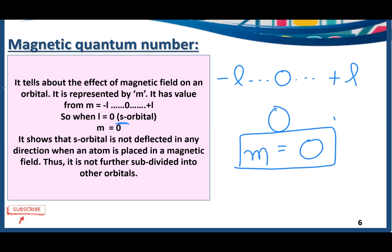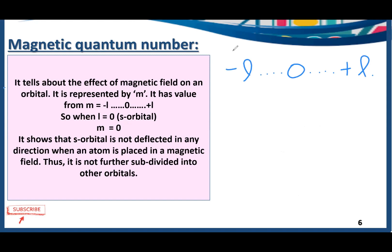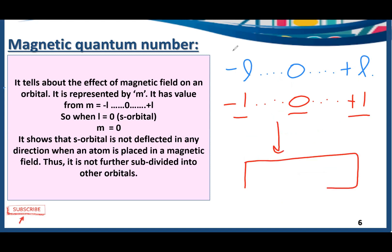For the p subshell, l equals 1, so m has values −1, 0, and +1 — giving us three magnetic quantum numbers for the p subshell. This is the reason the p subshell is subdivided into three orbitals, because when an electron is placed in a magnetic field, the p subshell is deflected in three different directions.